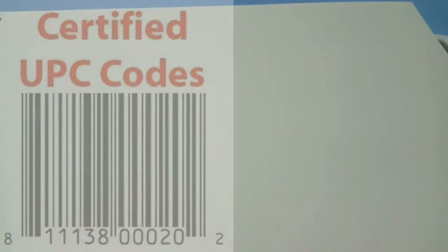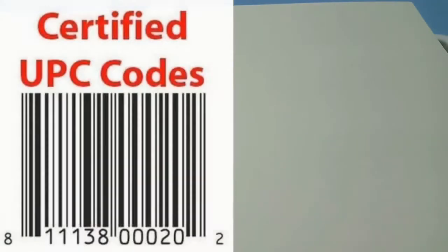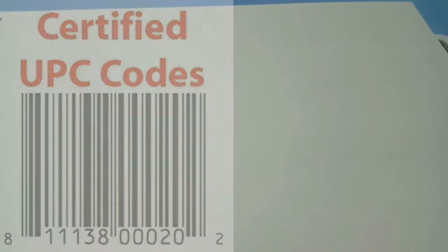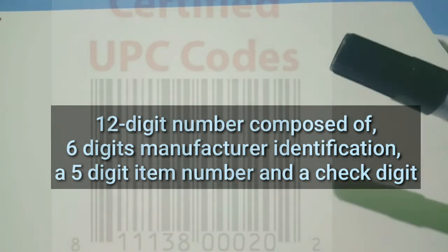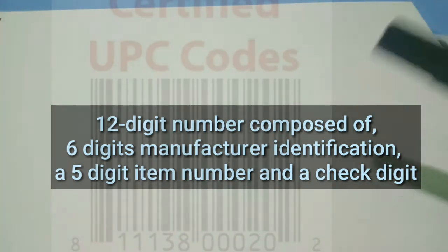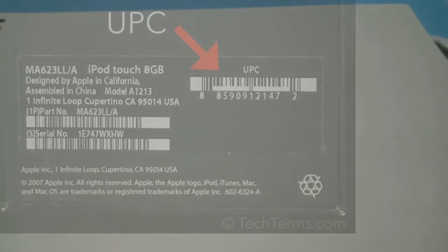So what is UPC or Universal Product Code? It is a 12-digit number composed of 6-digit manufacturer identification, 5-digit item number, and a check digit. This is used in codes on items or products to verify or identify that product, like books for instance, or other products or items.